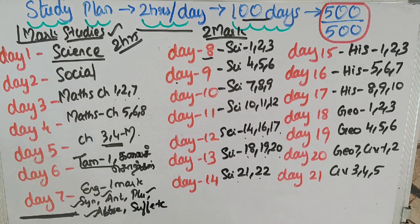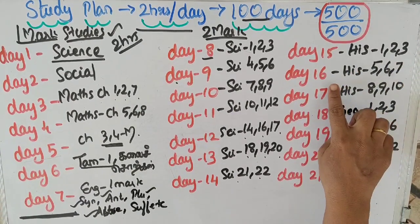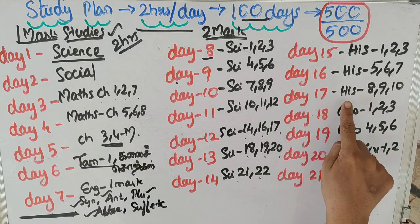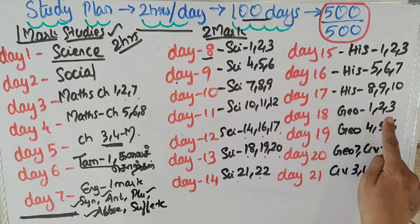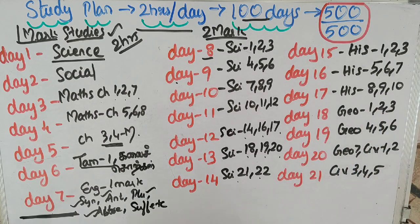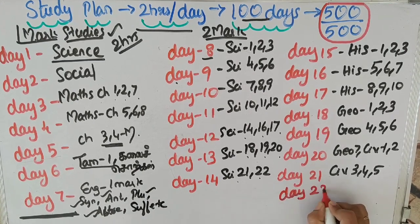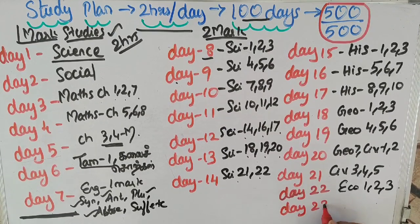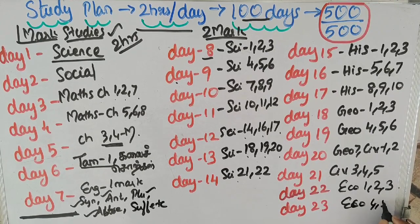Day 15: History lessons 1, 2, 3 - 2 marks. Day 16: History 5, 6, 7 - 2 marks. Day 17: History 8, 9, 10 - 2 marks. Day 18: Geography 1, 2, 3 - 2 marks. Day 19: Geography 4, 5, 6. Day 20: Geography 7, Civics 1 and 2. Day 21: Civics 3, 4, 5. Day 22: Economics 1, 2, 3 - 2 marks. Day 23: Economics 4 and 5 - 2 marks.